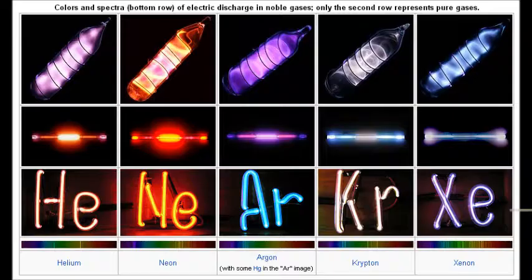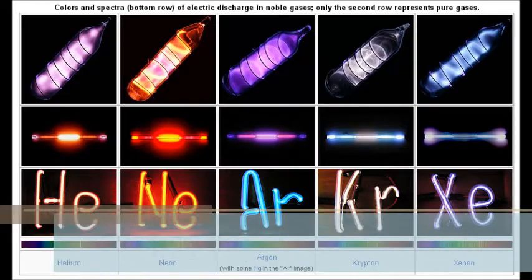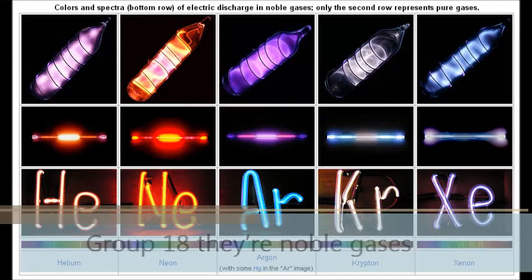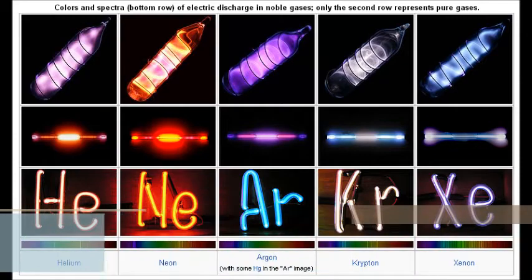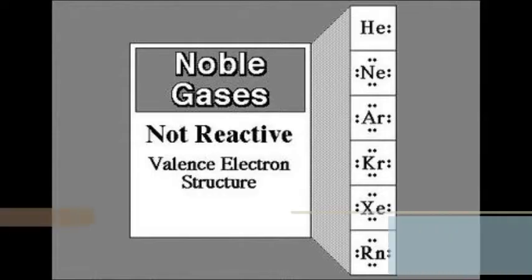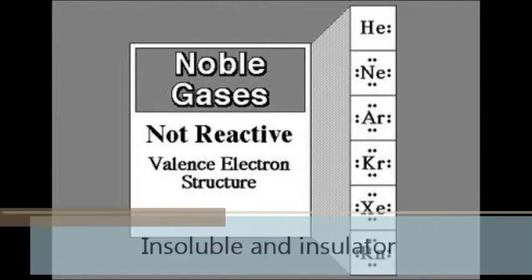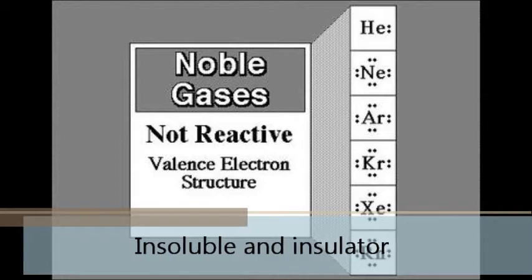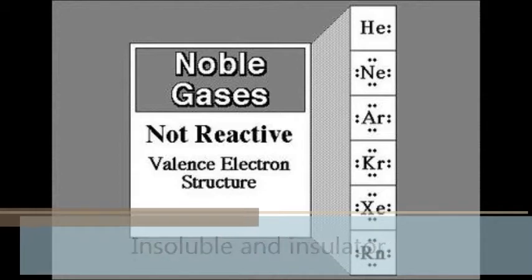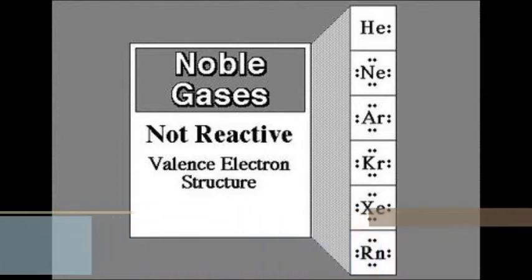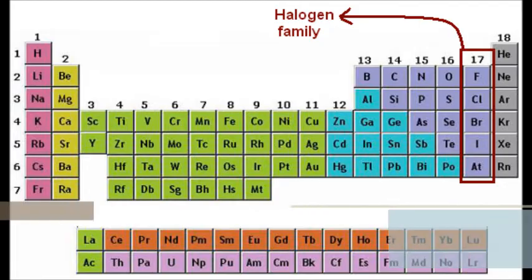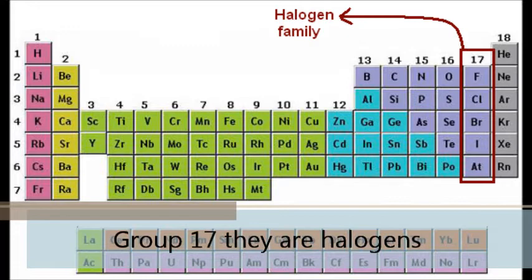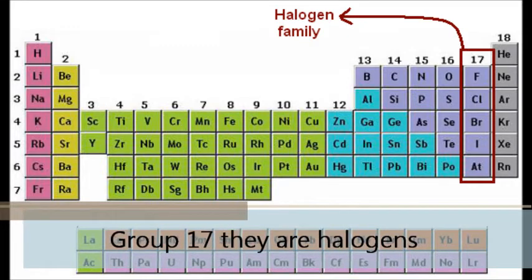From Group 18, the noble gases — insoluble insulators. Group 17, they are halogens.